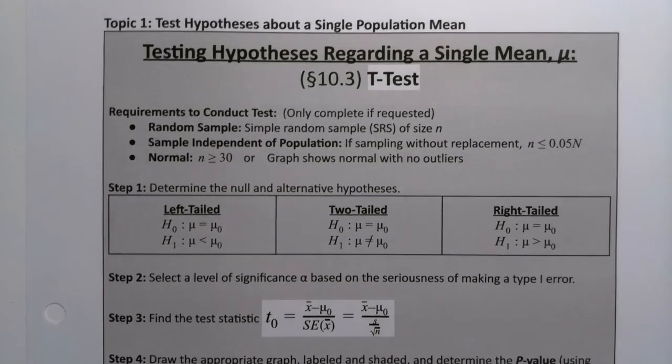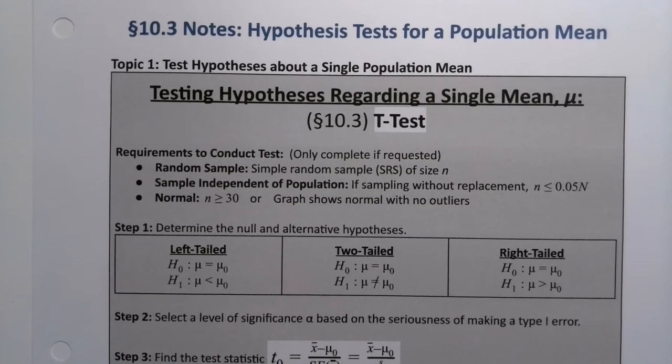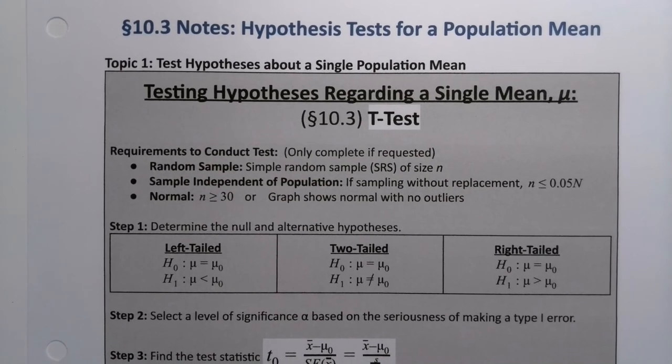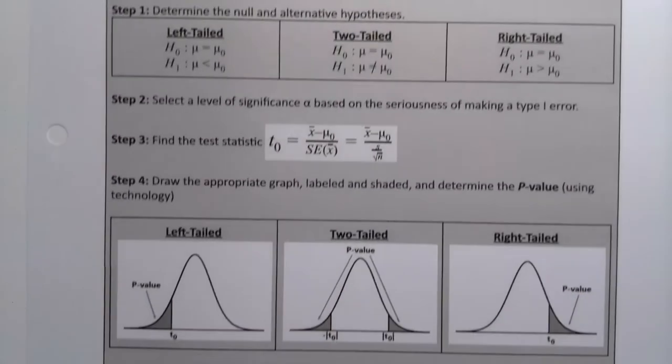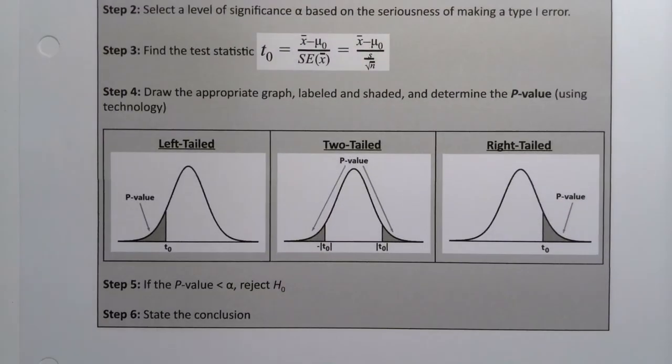And I apologize. I will fix that, and I already have fixed it. So here's the page in the notes from chapter 10. And you can see, well, this looks very familiar, right? It looks like the same six steps we were doing for the hypothesis test for a proportion, but there are some distinctions.